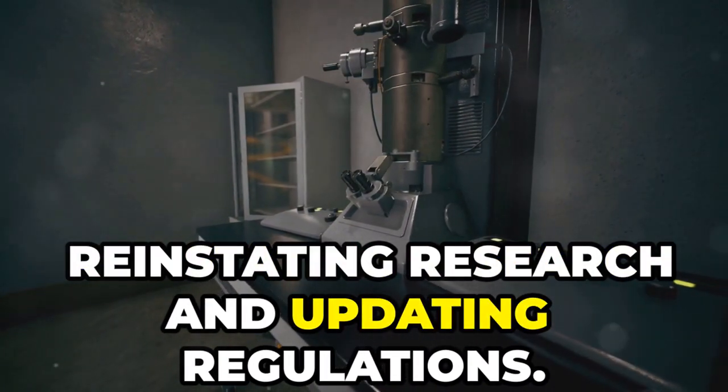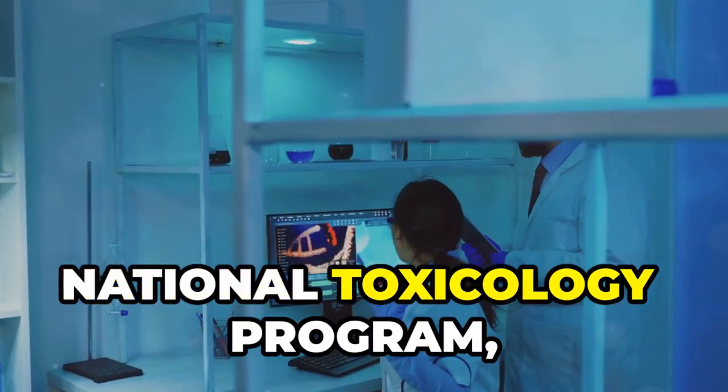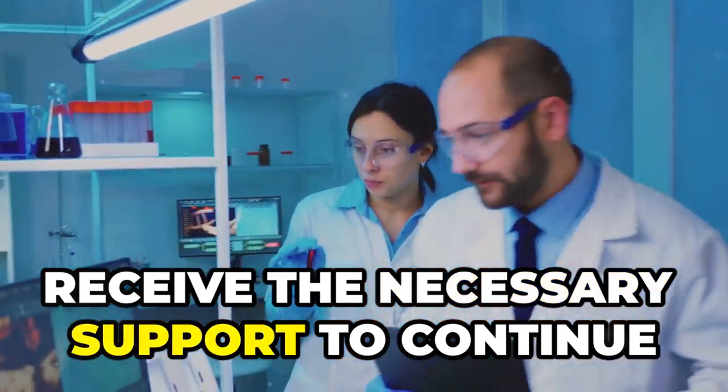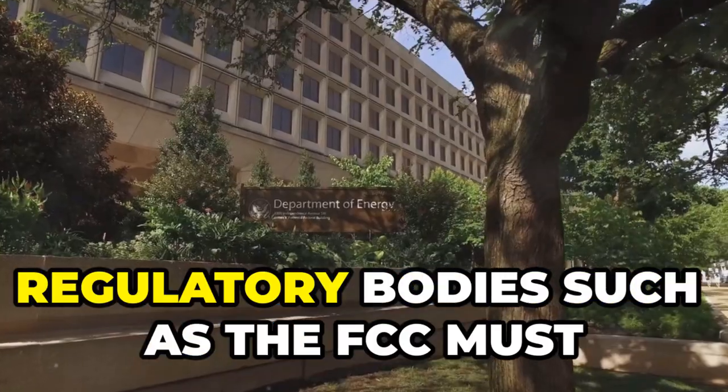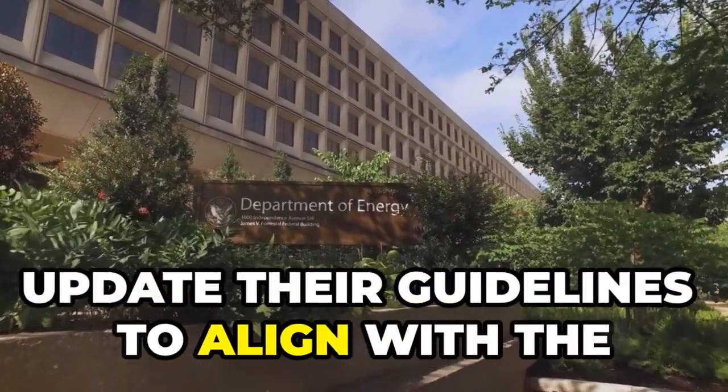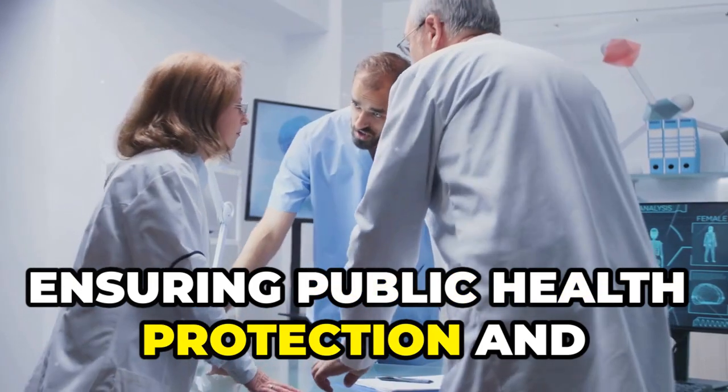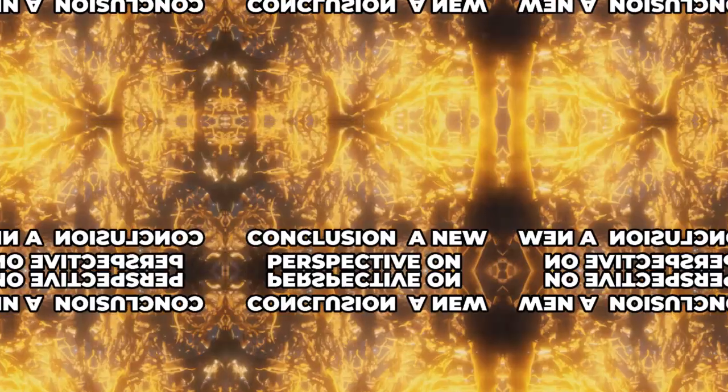Reinstating research and updating regulations. It is crucial that entities like the National Toxicology Program, or NTP, receive the necessary support to continue their research into cell phone radiation. Regulatory bodies, such as the FCC, must update their guidelines to align with the latest scientific findings, ensuring public health protection and fostering innovation that limits the biological impact of entropic waste.